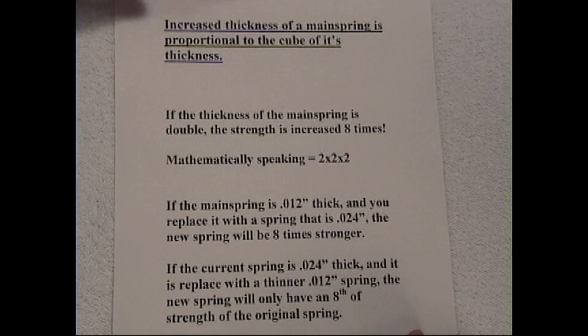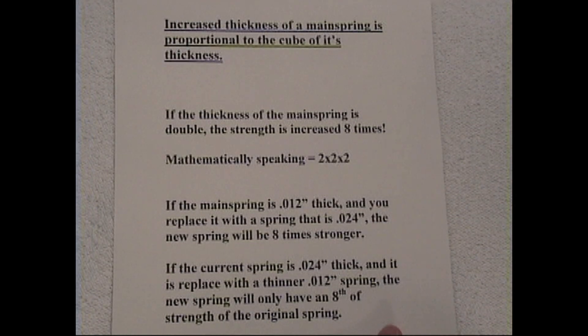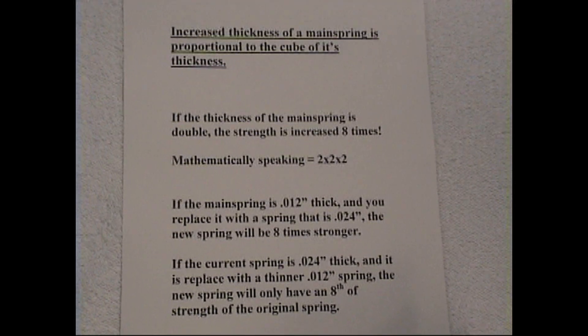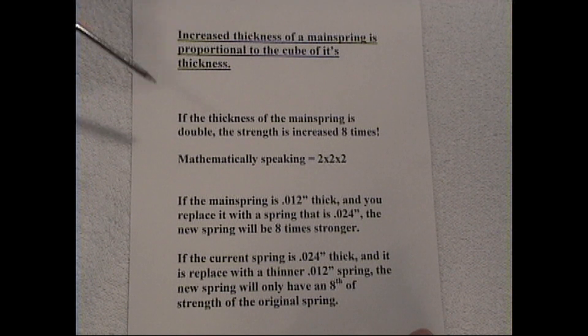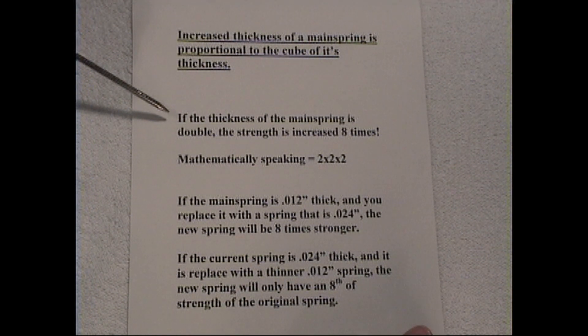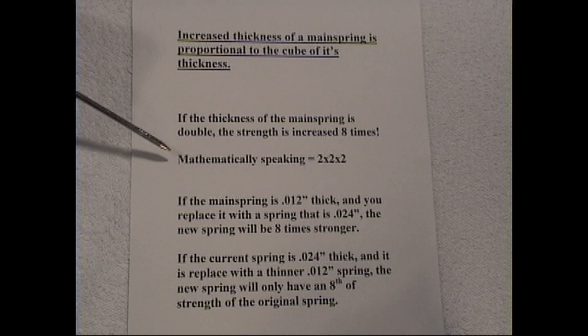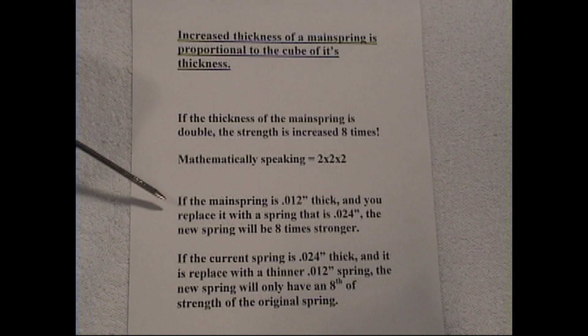Now, if you increase the thickness of the mainspring, that is directly proportional to the cube of its thickness. What that means is that if the thickness of the mainspring is doubled, the strength will increase eight times. Mathematically speaking, that would be two times two times two. That's the cube function.